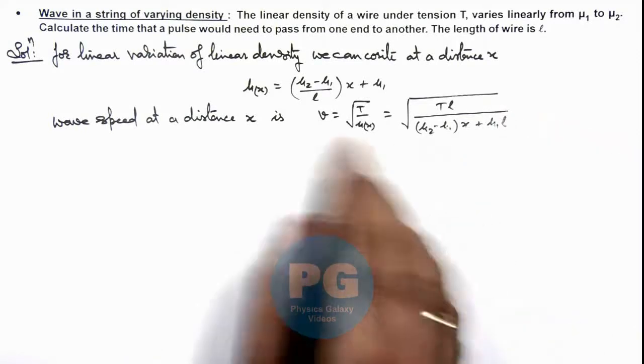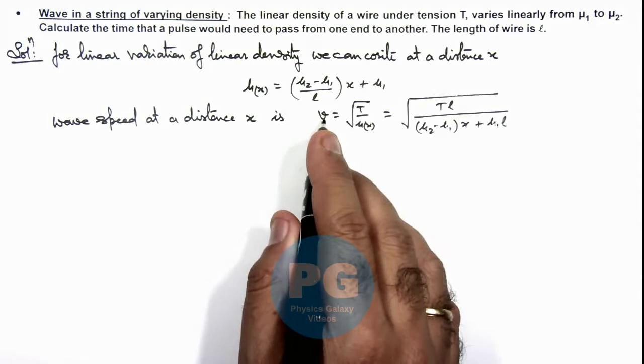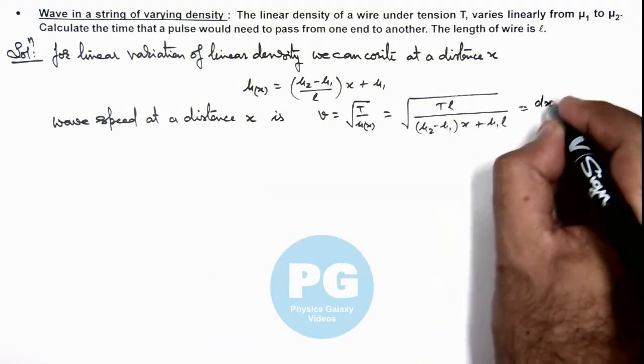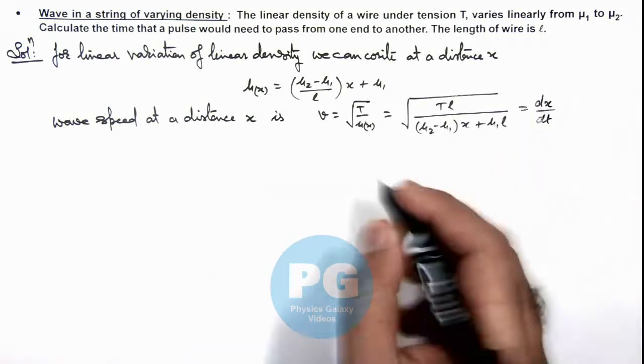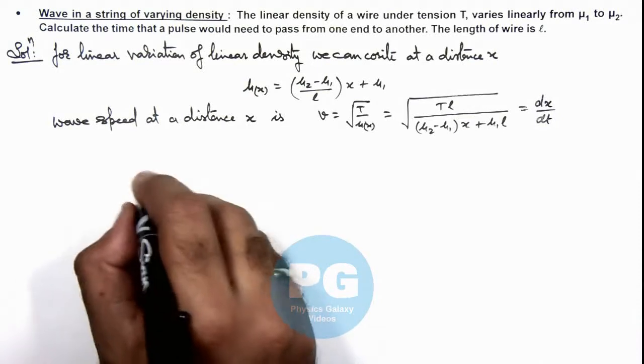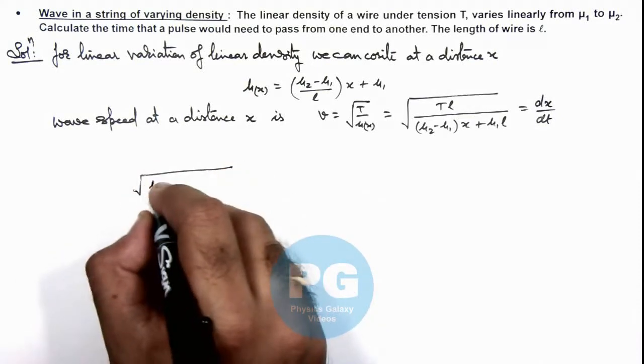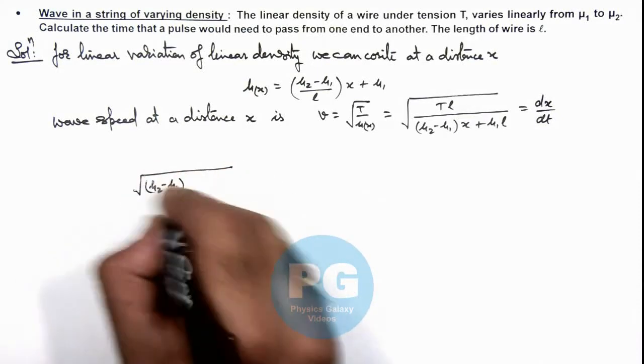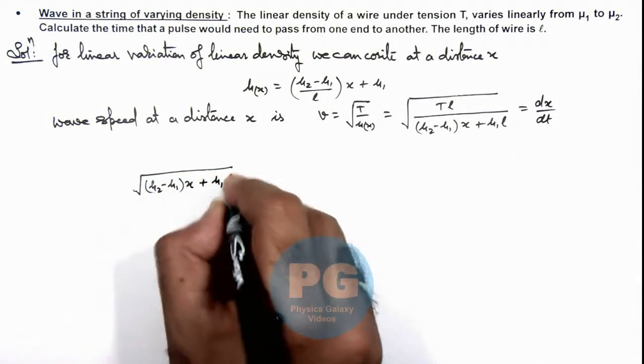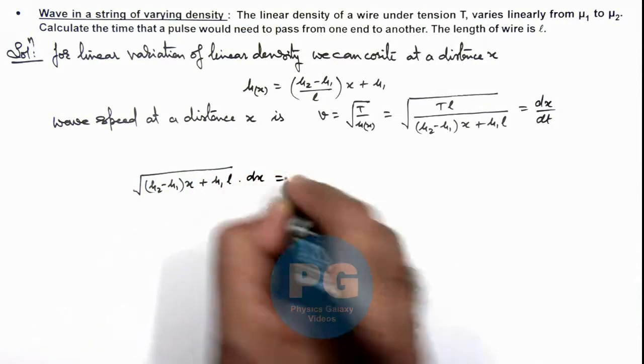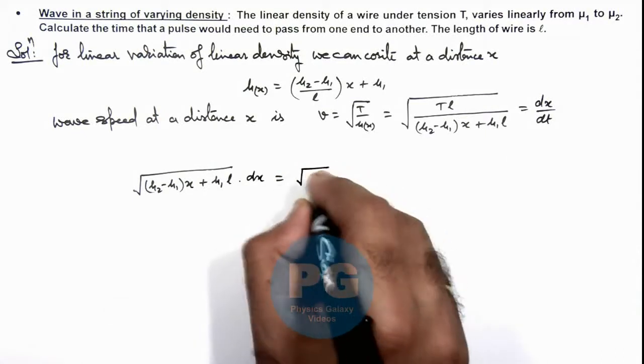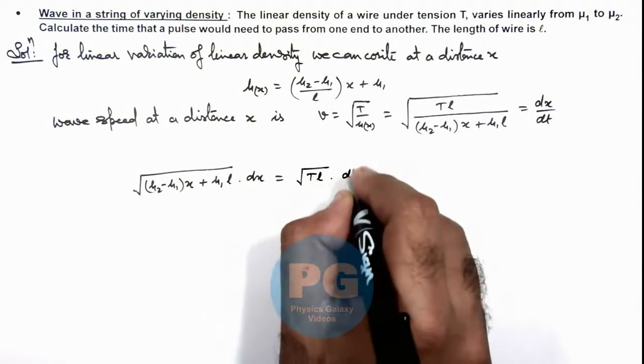And here, we can write v as dx/dt. And further, we rearrange the terms for integration as: √((μ2 - μ1)x + μ1L) dx = √(TL) dt.